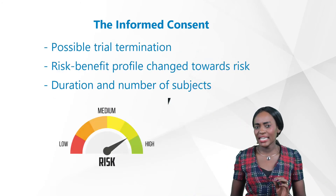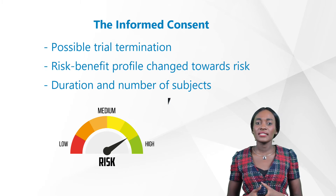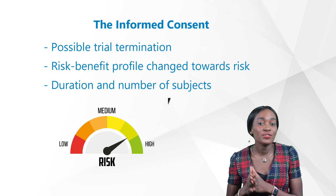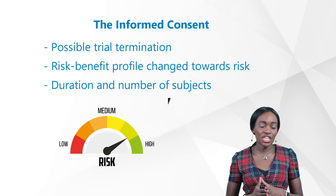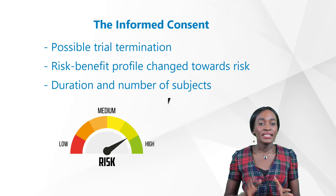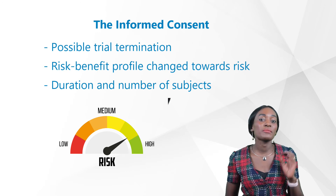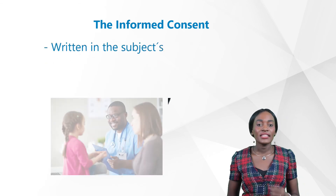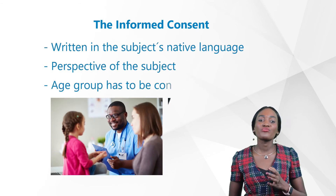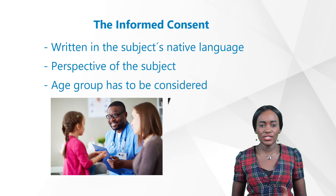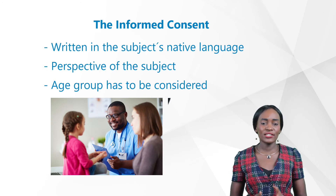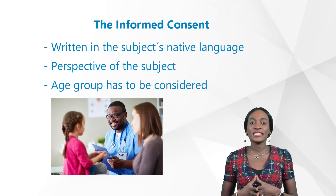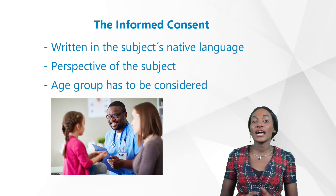It's important to explain the foreseeable circumstances under which a trial may be terminated — for example, if the risk-benefit profile of the study changes towards risk. The expected duration of the trial and the approximate number of subjects must also be mentioned. The informed consent must always be written in the subject's native language, and the age group must also be considered.